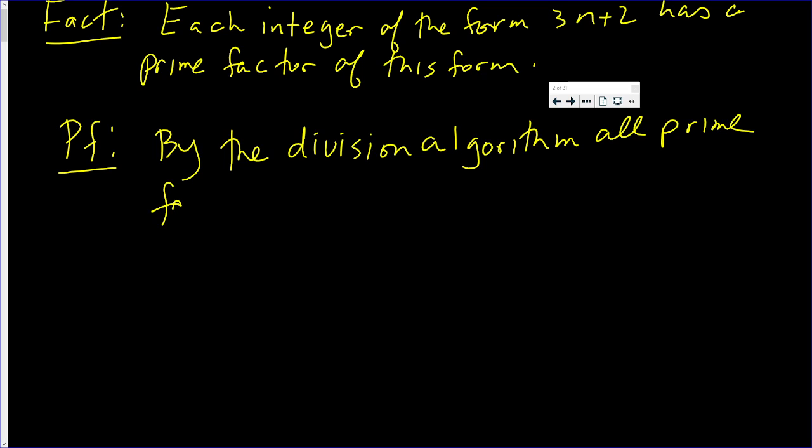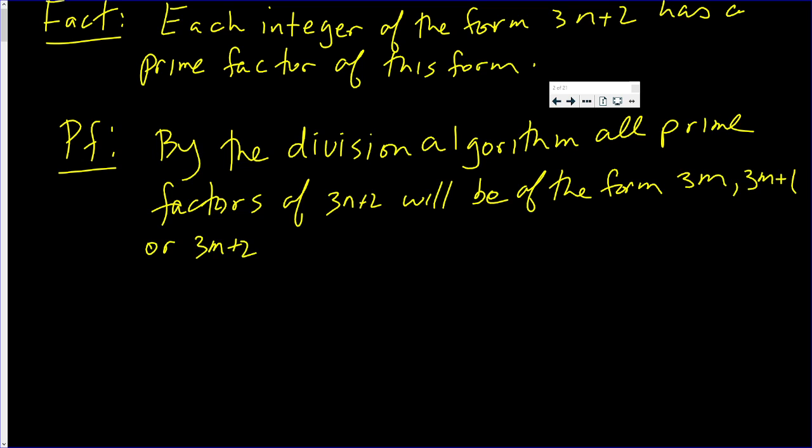All prime factors of 3n plus 2 will be of the form, and we're going to pick a clever form: 3n, 3n plus 1, or 3n plus 2.